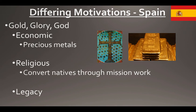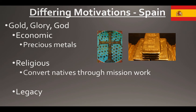The next country is Spain. Their big motivations were gold, glory, and God — the triple G. It was majorly economic; they were looking for precious metals and other resources. But once they encountered natives, religion became a motivation too. They saw the natives as people that needed to be converted, doing so through mission work, with missions eventually spreading into the southwestern United States. The legacy and glory of earlier conquistadors also fueled younger ones' motivations to explore deeper into the continent.